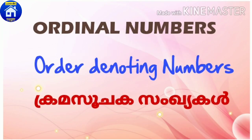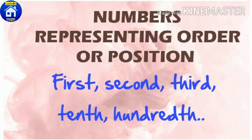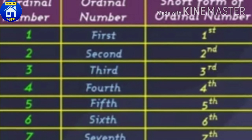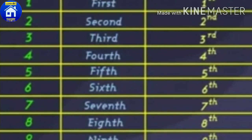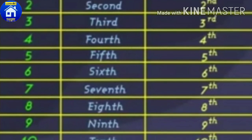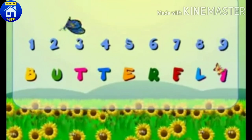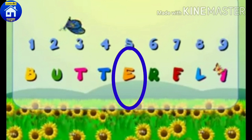Next, ordinal numbers — also called order-denoting numbers. Examples: 1st, 2nd, 3rd, 10th, 100th. We say 'he got first place,' 'he was in the 10th position.' For example, the letter E is in the 5th position.